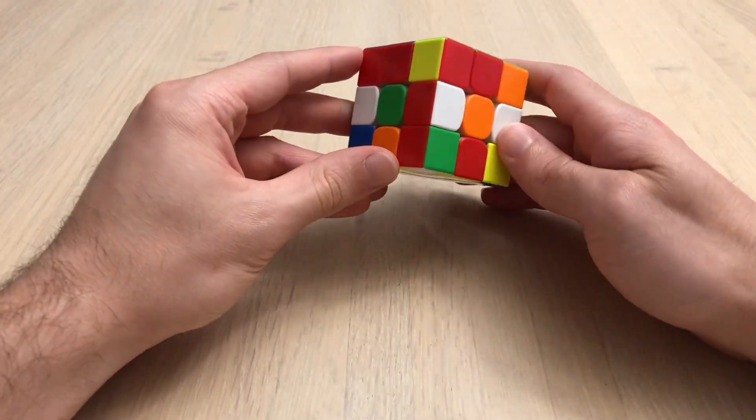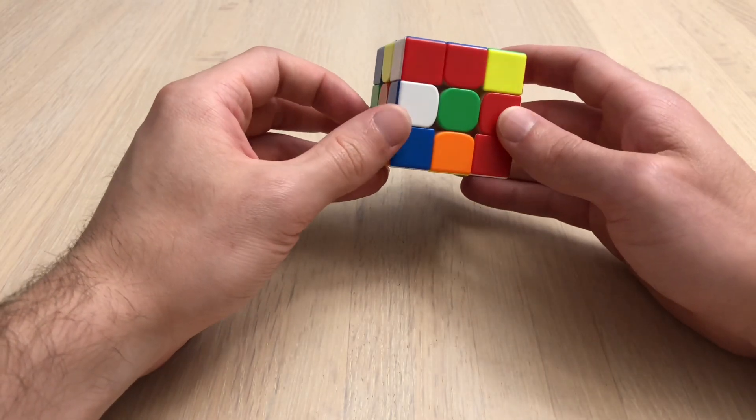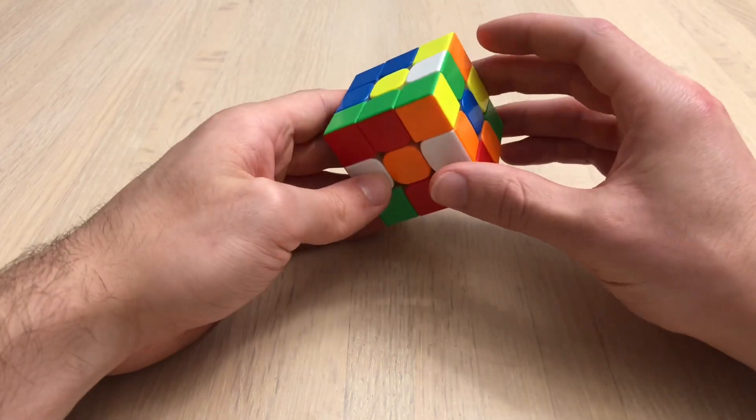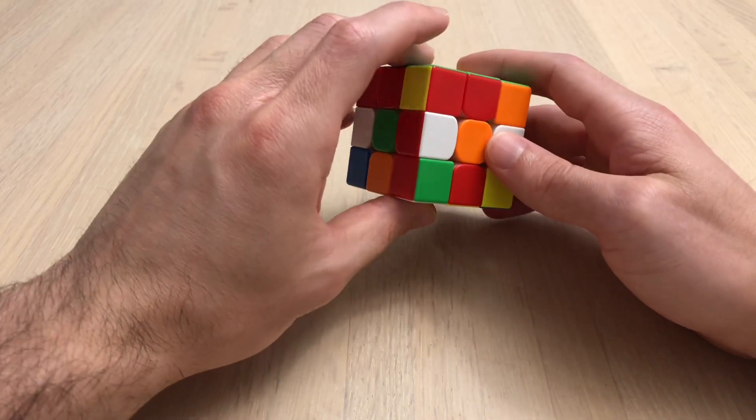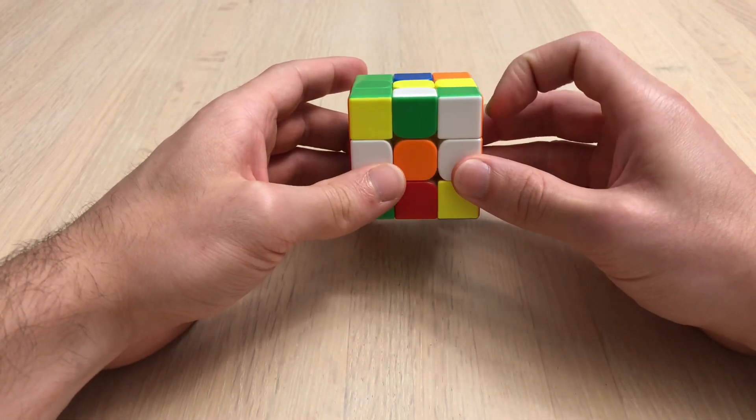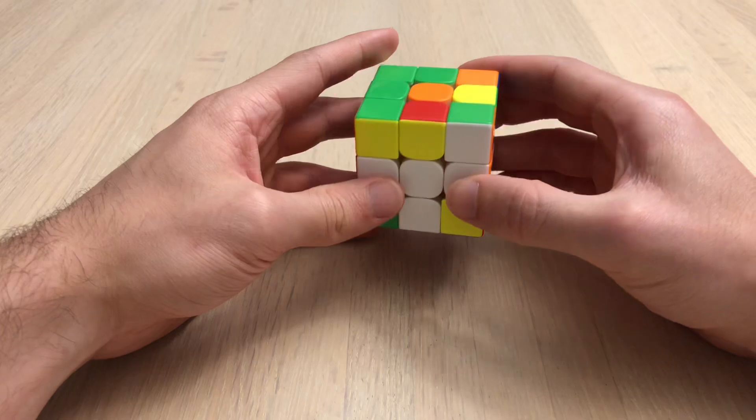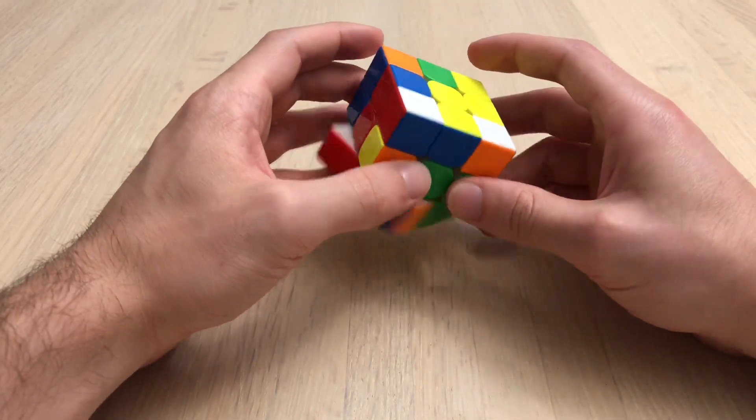Last scramble. I see these two are in place relative, and this one too. So I think what I'll do is solve this one first, and then do a U, bring these two down, solve the cross like that.